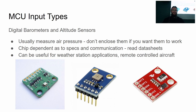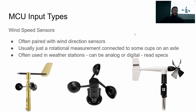There are digital barometers and altitude sensors — these typically work by measuring air pressure. If you want good readings, don't put them in a sealed enclosure box. They are chip-dependent as to how they talk to your microcontroller, but they can be useful for weather stations or RC aircraft. Wind speed sensors are another common one — typically just a rotational measurement, either an encoder or potentiometer connected to cups that blow in the wind, so you can tell how hard the wind is blowing by how fast the cups are moving. These usually come prepackaged with a communication protocol port.